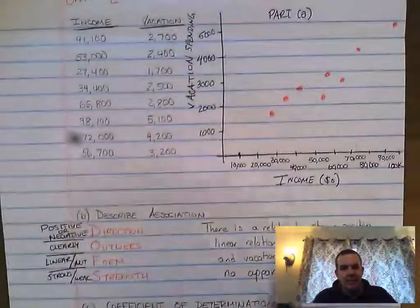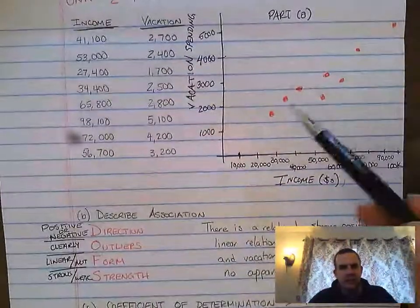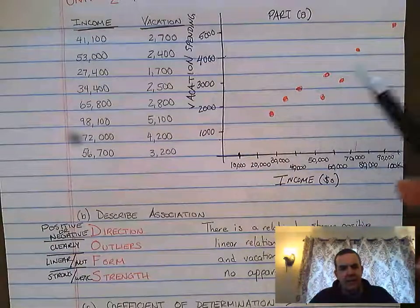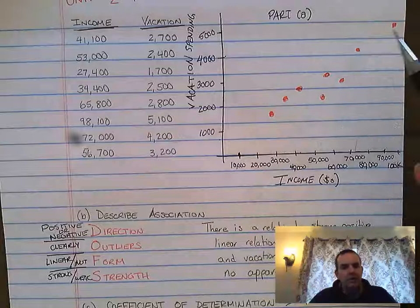So if I went ahead and I looked at the data up here, you can clearly see there's a positive relationship. As the explanatory gets larger, so does the vacation, so it's a positive slope, a positive association.